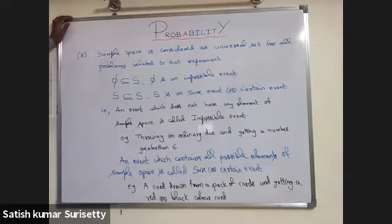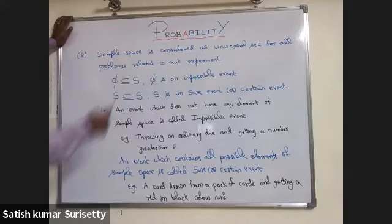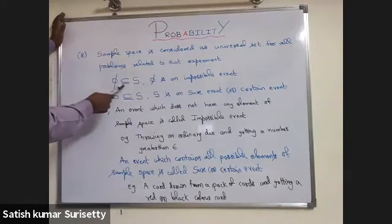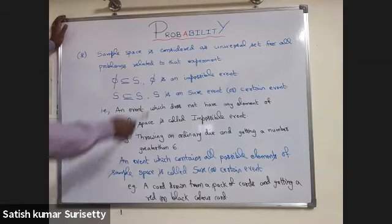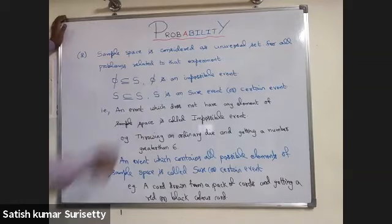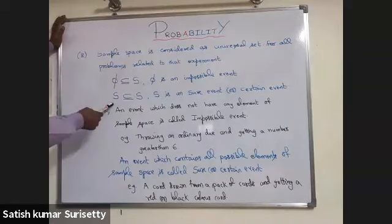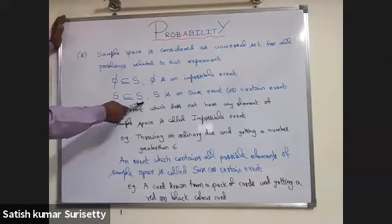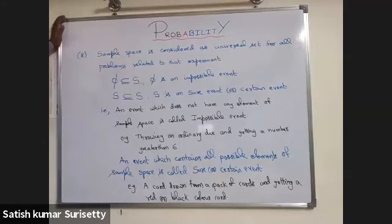The sample space is considered the universal set for all problems related to that experiment. The null set phi is a subset of the sample space S. The null set is an impossible event, and since every set is a subset of S, the sample space S is a subset of itself — meaning S is a sure event or certain event.